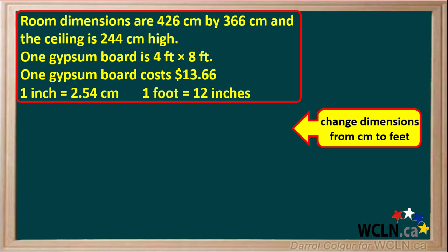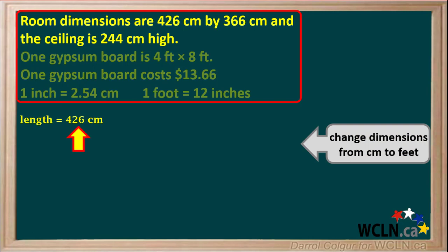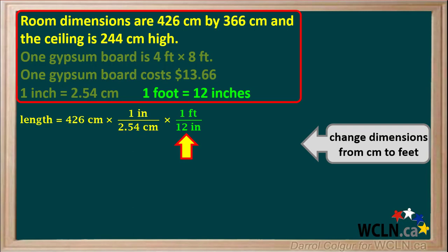Because the dimensions were sent in centimeters and the boards are measured in feet, the first thing to do is convert all the centimeter values to feet. We start with the length of the room, which is 426 centimeters, and multiply by the conversion factor 1 inch per 2.54 centimeters, so that centimeters cancel and we're left with inches. Next we multiply by another conversion factor, 1 foot per 12 inches, so that both centimeters and inches cancel out, leaving us with the unit feet.